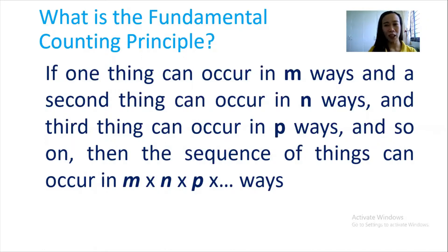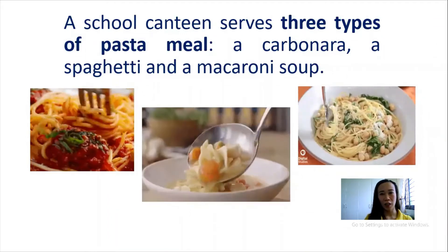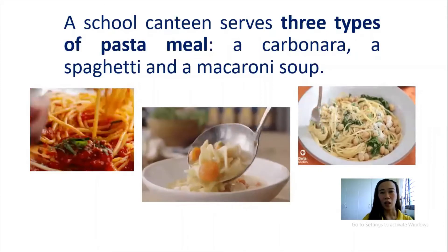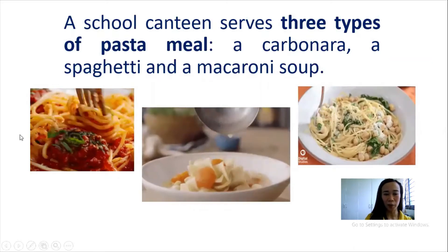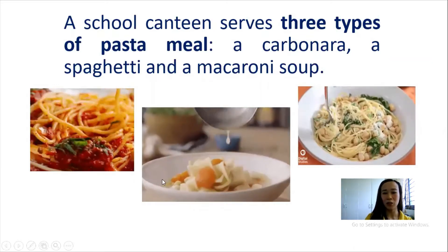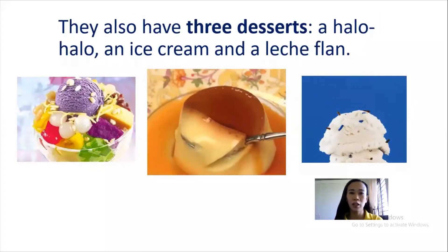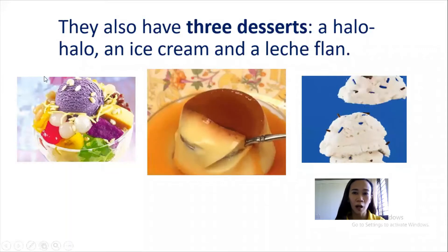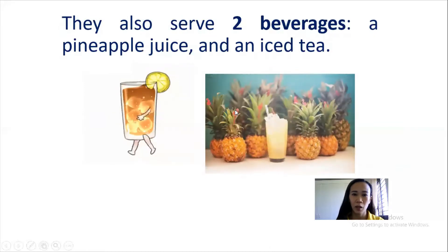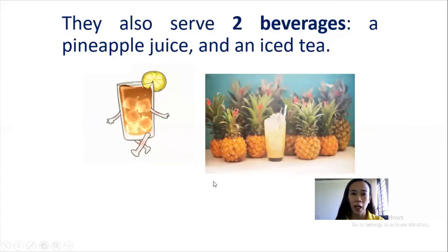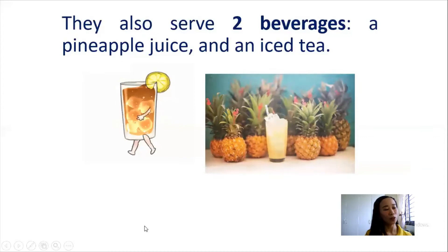To better understand this, I'm going to make you hungry today. I have prepared an example for you. A school canteen serves three types of pasta meal: carbonara, spaghetti, and macaroni soup. They also serve three desserts: halo-halo, ice cream, and leche flan. They also serve two beverages: pineapple juice and iced tea.